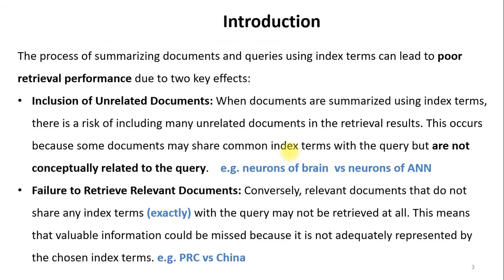The process of summarizing documents and queries using index terms can lead to poor retrieval performance due to two key effects. The first is the inclusion of unrelated documents. When documents are summarized using index terms, there is a risk of including many unrelated documents in the retrieval result, because some documents may share common index terms with the query but are not conceptually related. For example, 'neurons of brain' versus 'neurons of artificial neural network' — the word 'neuron' is shared but the concepts are totally different.